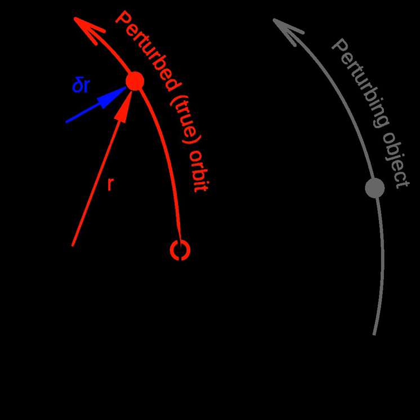The osculating elements would remain constant in the absence of perturbations. Real astronomical orbits experience perturbations that cause the osculating elements to evolve, sometimes very quickly.